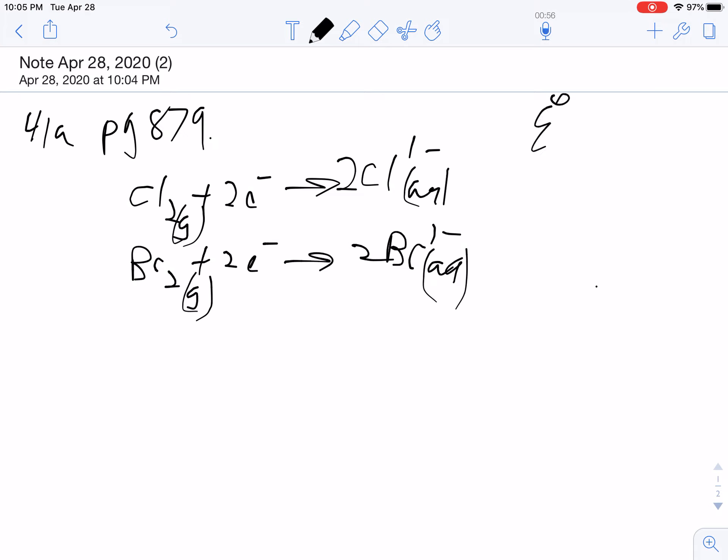So potential for the half reaction, 1.36, 1.09. So we need a positive cell potential, so we're going to flip this one. And I get 0.27 volts.